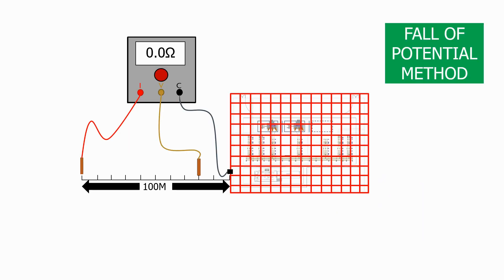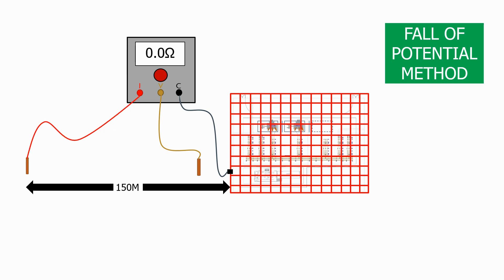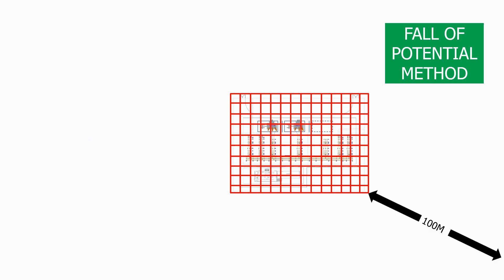What do you do if the graph doesn't flatten out? Well, you may need to insert the current probe farther away from the substation or in a different direction. It is good practice to take more than one set of readings so we normally go off in two opposite directions and then compare the readings that we achieve.